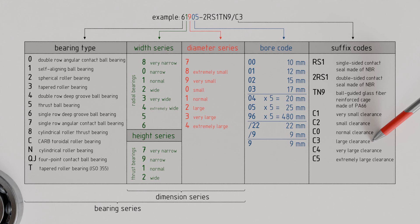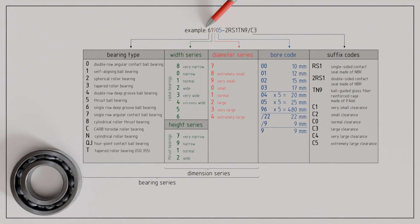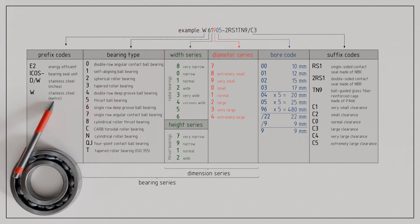Manufacturers may use prefix codes for bearings that deviate from the basic design, which are placed before the bearing series. This can, for example, indicate that a bearing is made of special stainless steel or is particularly energy-efficient.